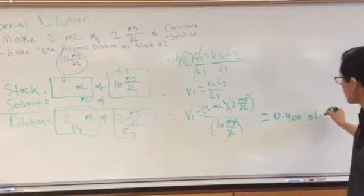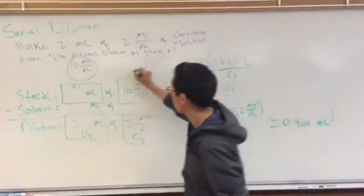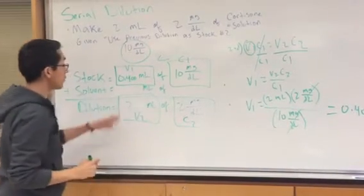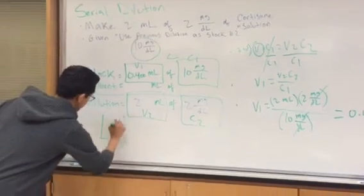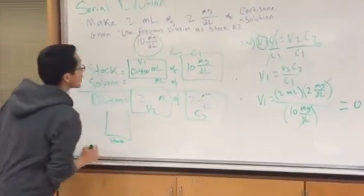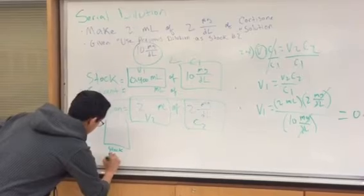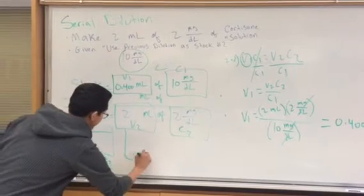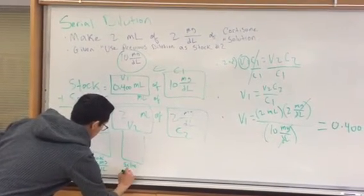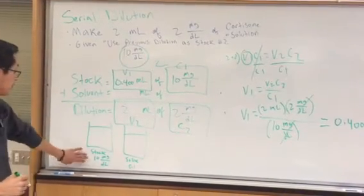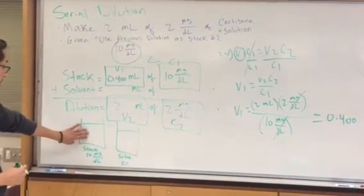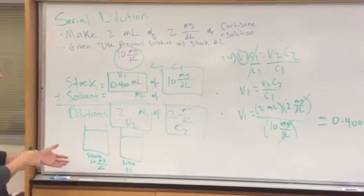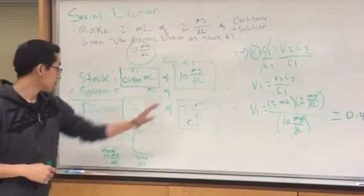So then, this 0.400, we'll go ahead and move that right there. 0.400 milliliters of our stock. So again, our stock, let's say this is our stock of our 10 milligrams over deciliter. And then, this is our saline solution. So then, from your stock that you used before, not the original, but the one you made, we're going to go ahead and pull 0.400 milliliters of this one.